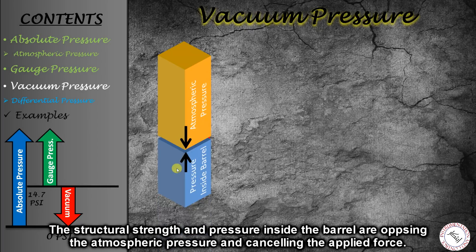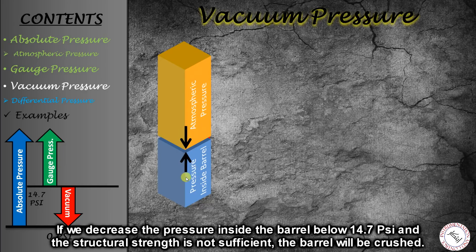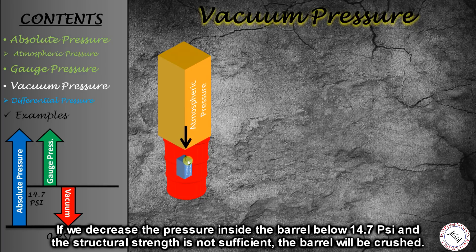But if we reduce the internal air pressure to less than 14.7 psi, and the structural strength of the barrel is not sufficient, then the outside atmospheric pressure of 14.7 psi will crush the barrel.